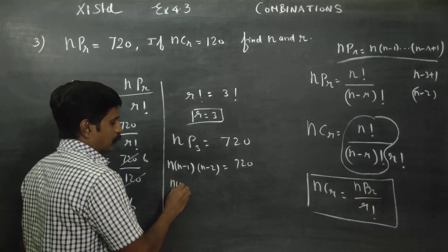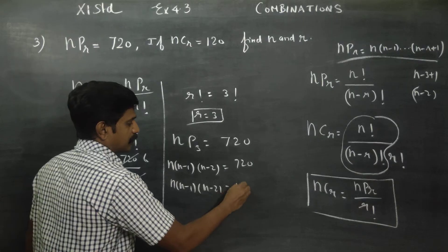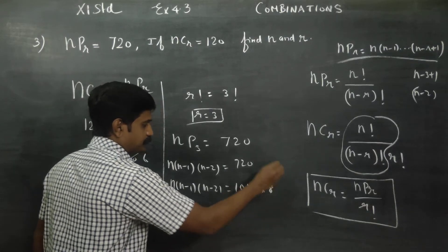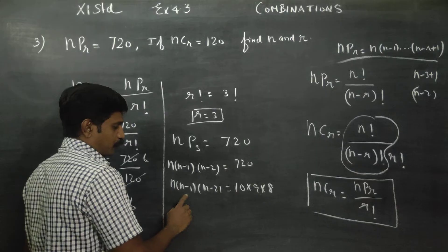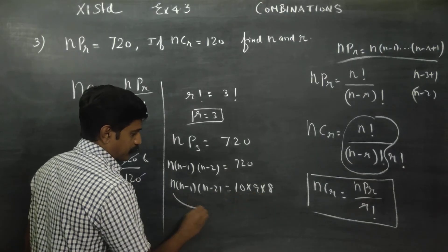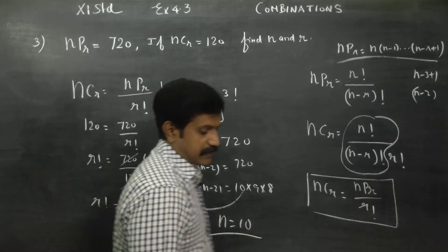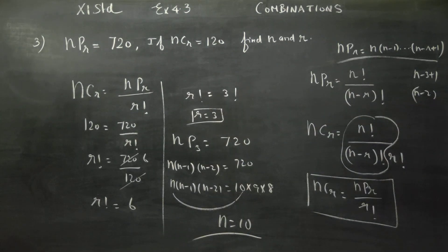N into N minus 1 into N minus 2 equals 720. This can be written as 10 into 9 into 8, which equals 720. Matching both sides, N is equal to 10. So our final answers are R is equal to 3 and N is equal to 10.